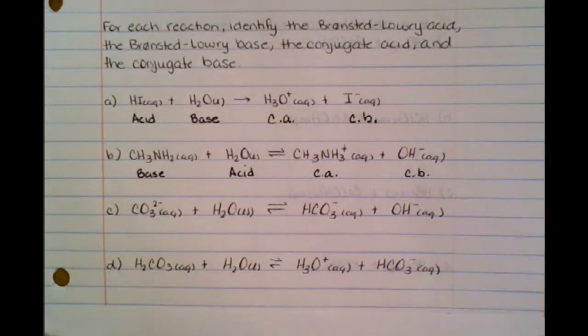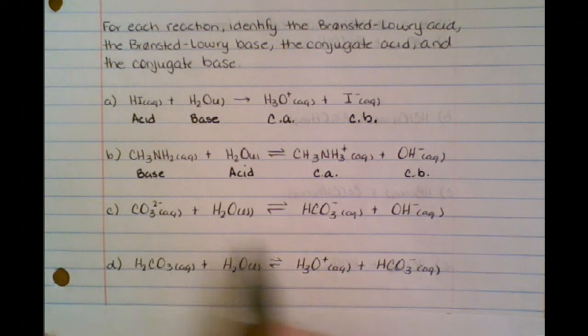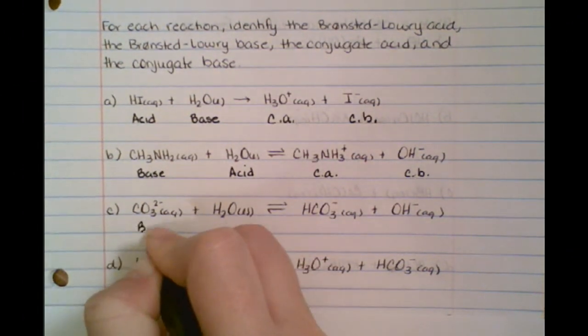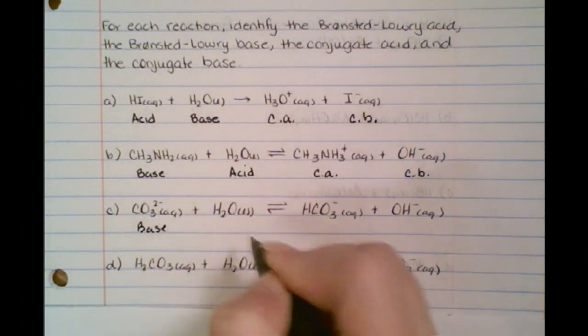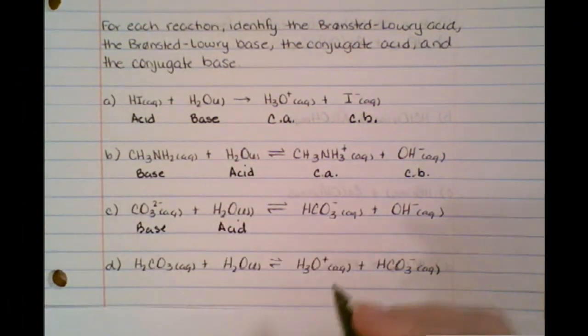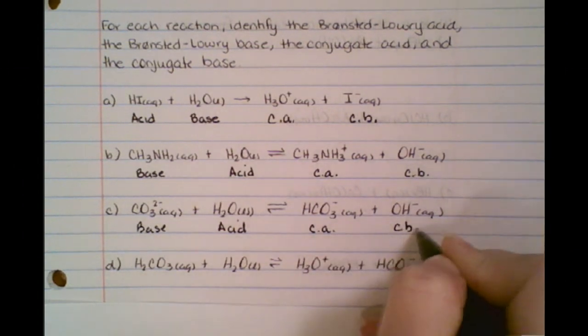So, on C, I'm looking at it, I notice that this one right here, it's going to accept a proton on the other side, so it's going to be a base. And that means the other reactant is automatically an acid. So, this one belongs with the base, so this is the conjugate acid, and this is the conjugate base.